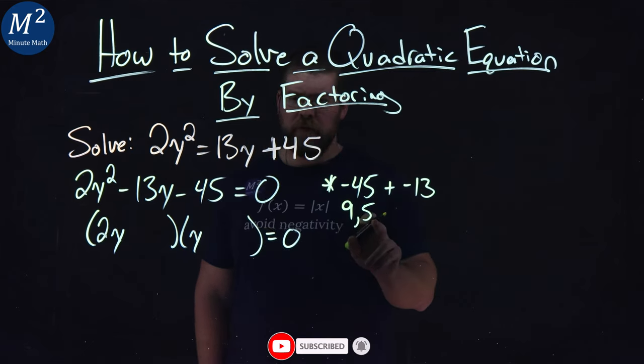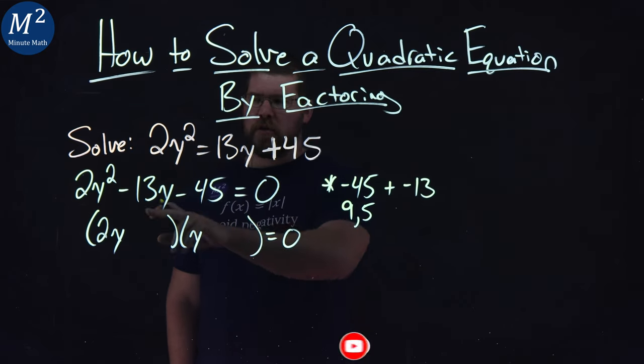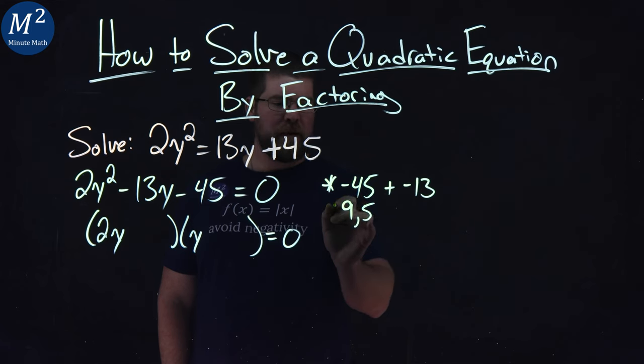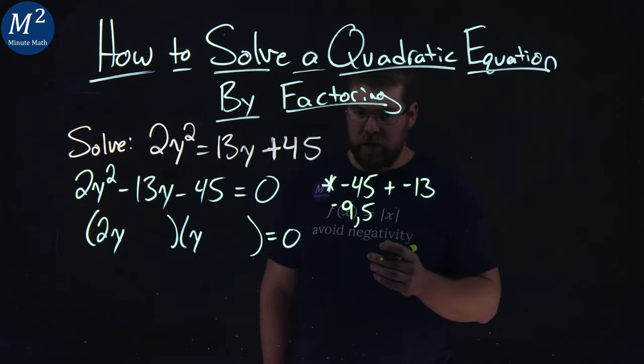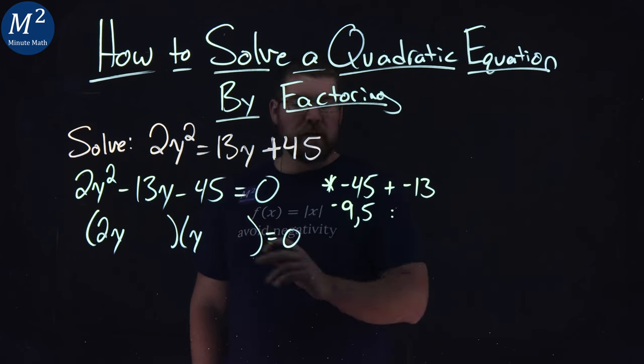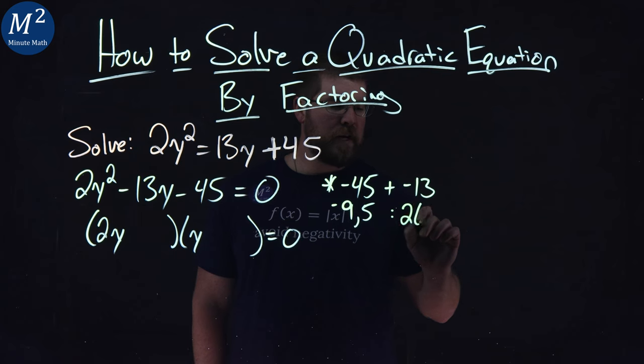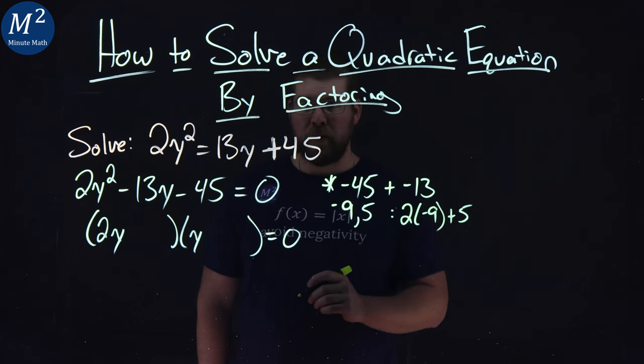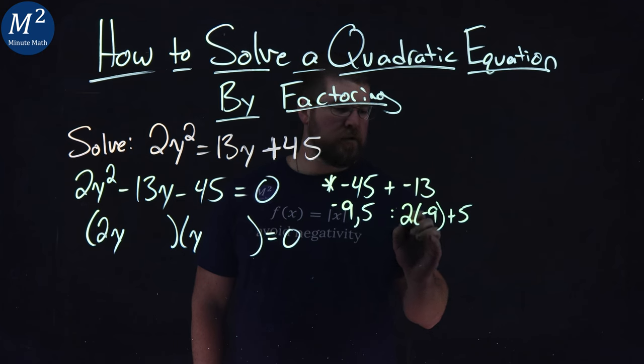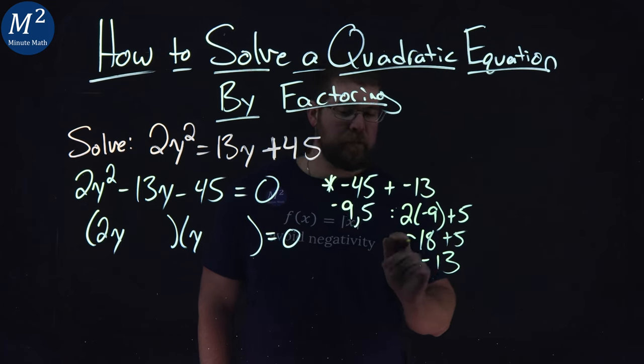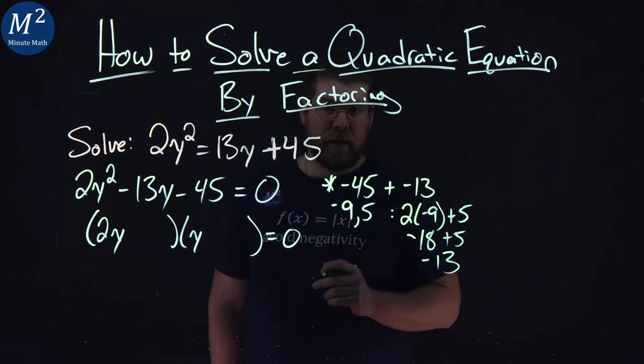But when I add to somehow get negative 13... 9 and 5, right, 2 gets multiplied by one of them. So if we have negative 9 and positive 5, to see how they add up to be negative 13: 2 times negative 9 plus positive 5. 2 times negative 9 is negative 18. Negative 18 plus 5 is negative 13. And we know negative 9 times 5 is negative 45.